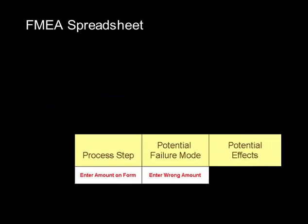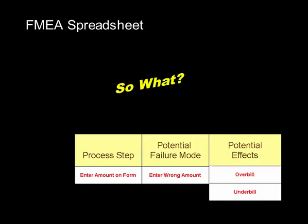From there we go on to potential effects. We're going to ask: so what? If this failure mode happened, what would the effect be? Well, if we enter the wrong amount, we might overbill or underbill a patient.